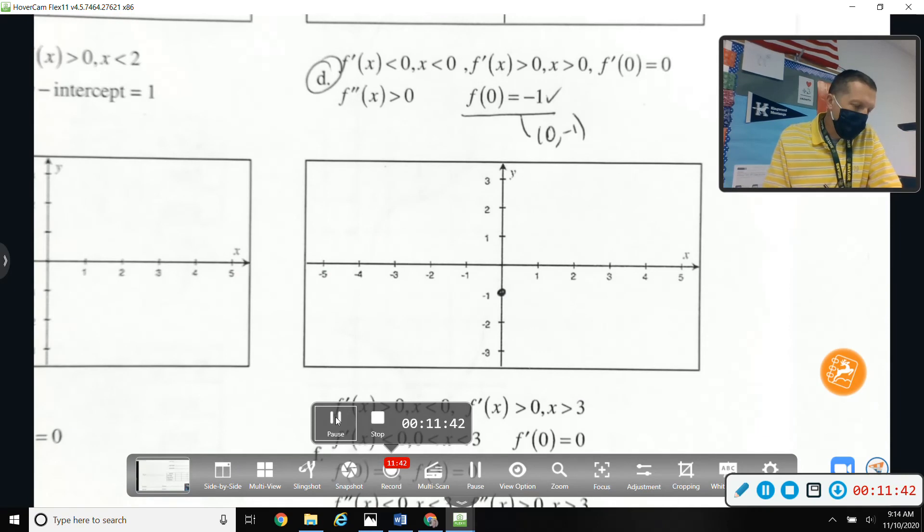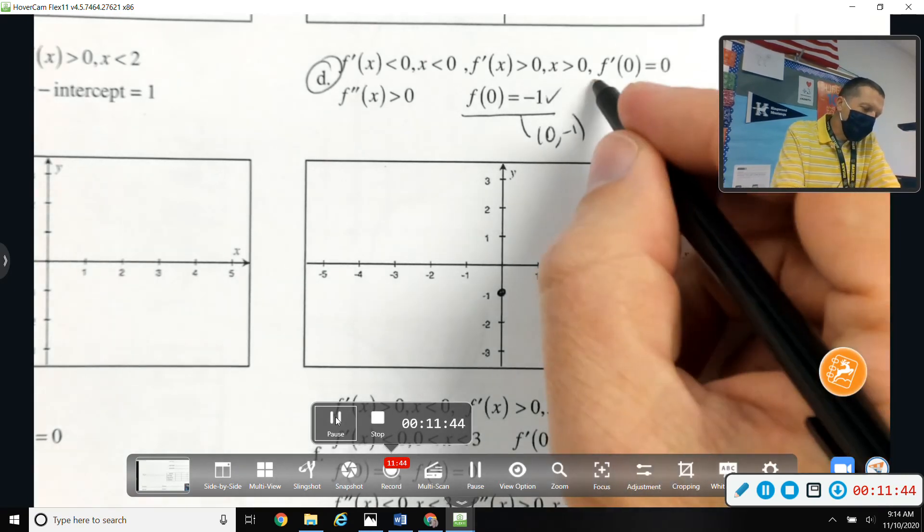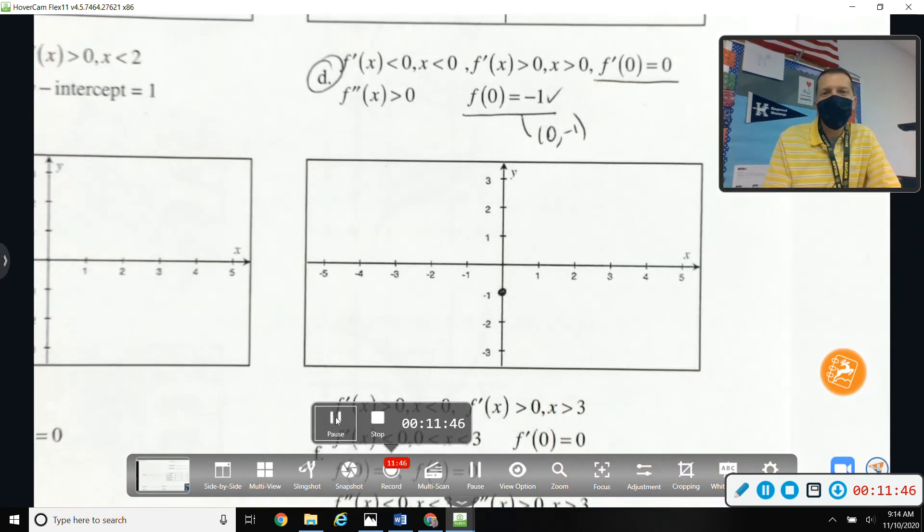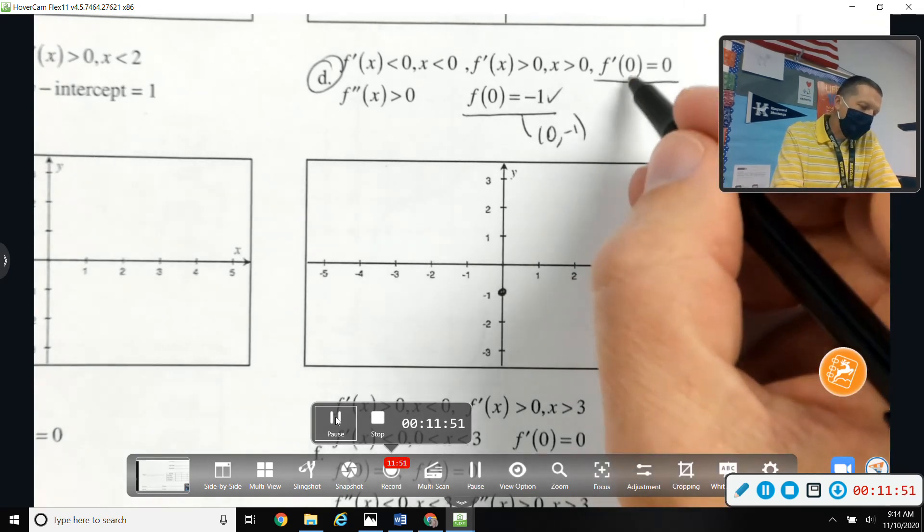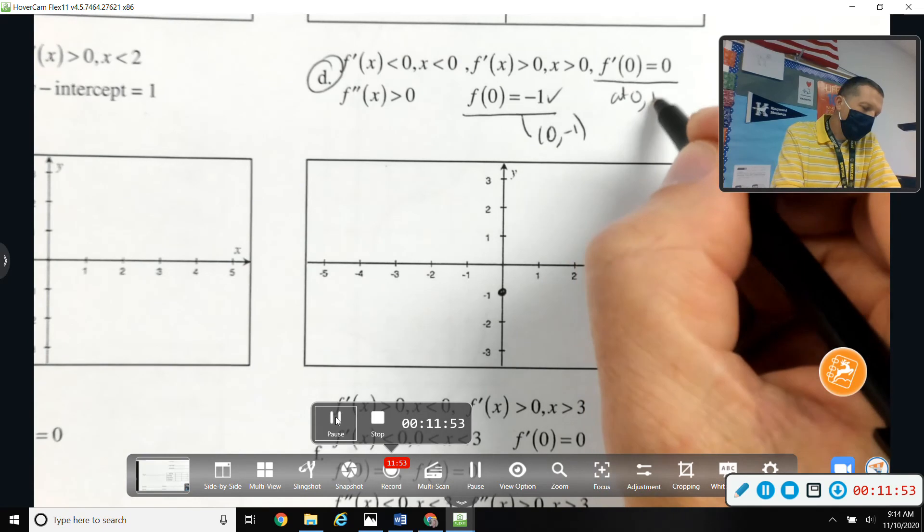I like the equals things because those are a little more definitive. F prime of 0 equals 0, so that means at 0 we have a horizontal tangent line.